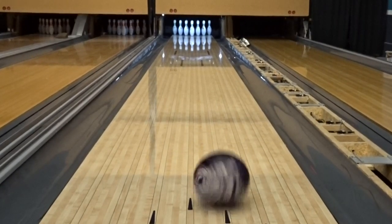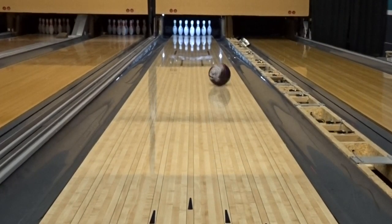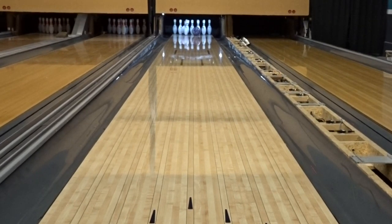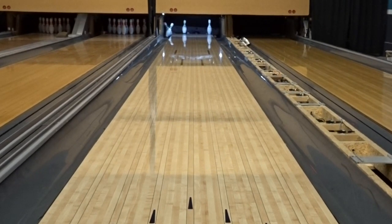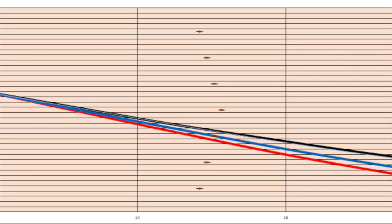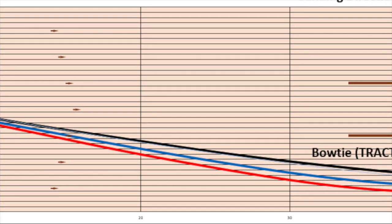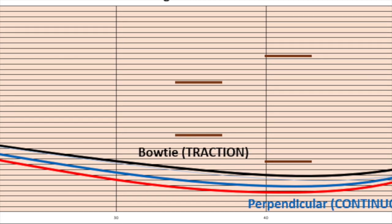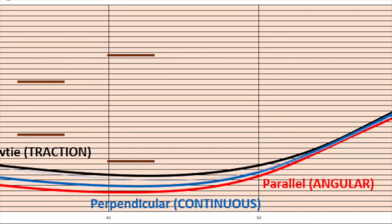Now let's take a look at some performance data from shots thrown with the same bowling ball, same sanding pad, but with different sanding directions. All these shots were thrown by a robot, tracked by Specto, and used the bowler variables as shown on screen. Looking at an overlay of these three shots, we can see that there is a large difference when comparing the three methods of sanding the bowling ball.